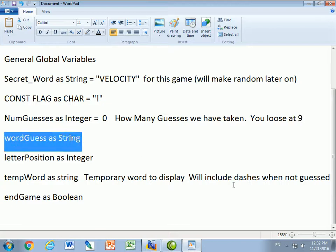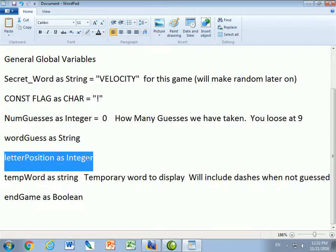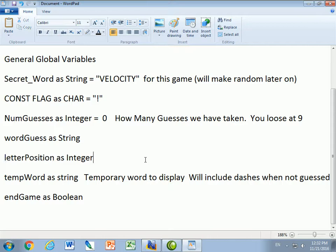Word guess is going to be the word that we're guessing. It'll be a string. Letter position. We're going to use the substring and in Visual Basic the substring, so if secret underscore word is velocity.